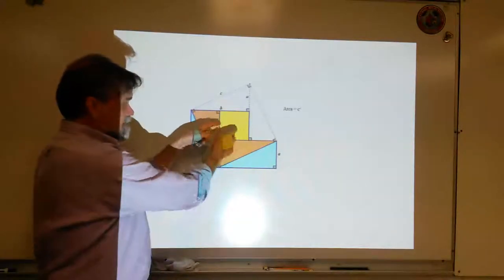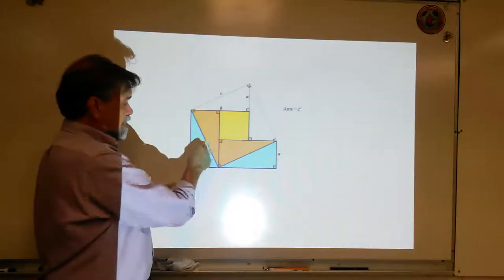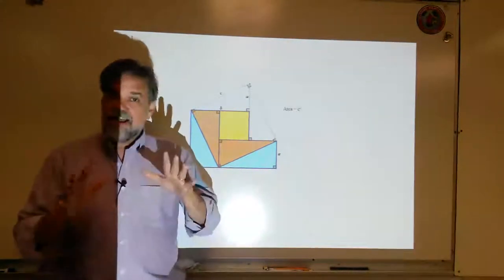I think everybody can agree with that. You still have this little yellow square in the middle and these four triangles. However, notice this side here is B.